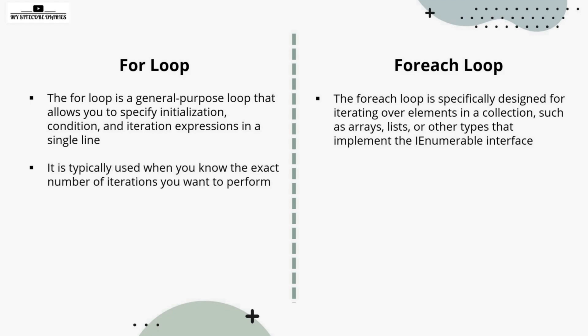The for loop is typically used when you know the exact number of iterations you want to perform. As you can see in the syntax, where you have to define the condition, you should be knowing the exact number of iterations you want to do.